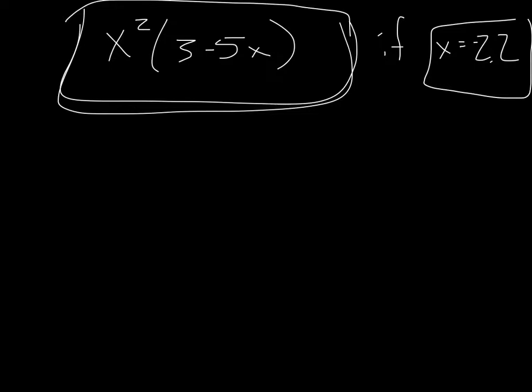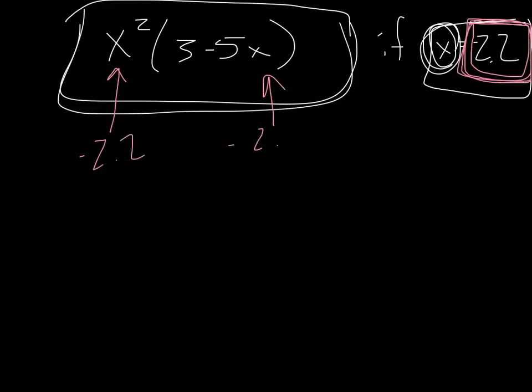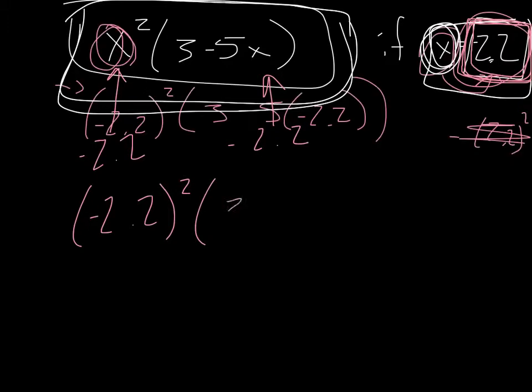Okay, so all you have to do in a situation like this is they're giving you what x is. So all you're gonna do is you're gonna take—sorry, I had a fire. I had a whole building. I blew it out just like that. You replace wherever x is with negative 2.2 because if x is the exact same as negative 2.2, you can take out this x and this x and put in negative 2.2. So let's do that: negative 2.2 squared, then times 3 minus 5 times negative 2.2.